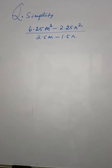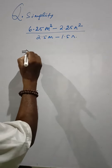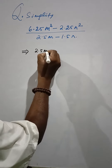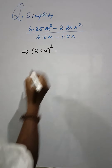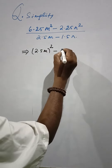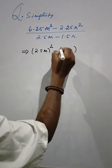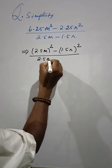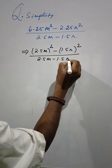Simplify 6.25m² minus 2.25n² divided by 2.5m minus 1.5n. Here, 6.25 means 2.5m whole square, minus 2.25n² means 1.5n whole square, divided by 2.5m minus 1.5n.